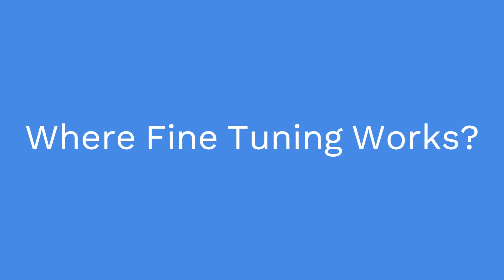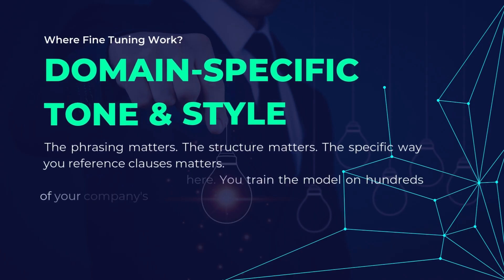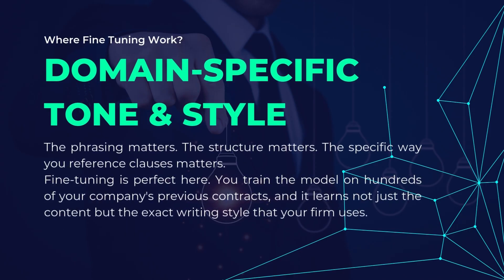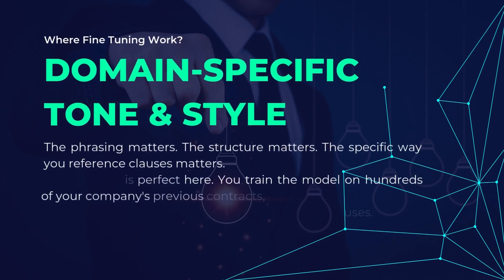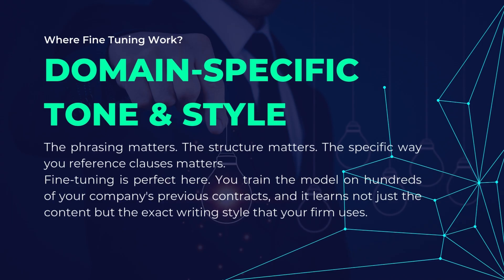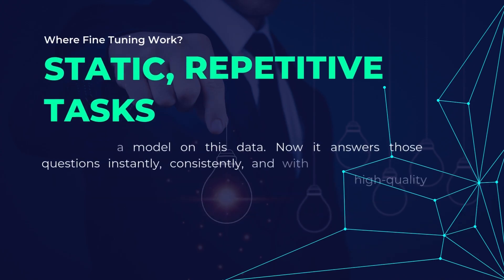Real-world use cases. When does fine-tuning make sense? Domain-specific tone and style: imagine you're building a system to draft legal contracts. This isn't just about knowing legal language — it's about sounding like a lawyer. The phrasing matters, the structure matters, the specific way you reference clauses matters. Fine-tuning is perfect here. You train the model on hundreds of your company's previous contracts and it learns not just the content but the exact writing style your firm uses. A RAG system might pull in relevant clauses but won't necessarily sound like your lawyers — you'd need heavy prompt engineering to fix that.